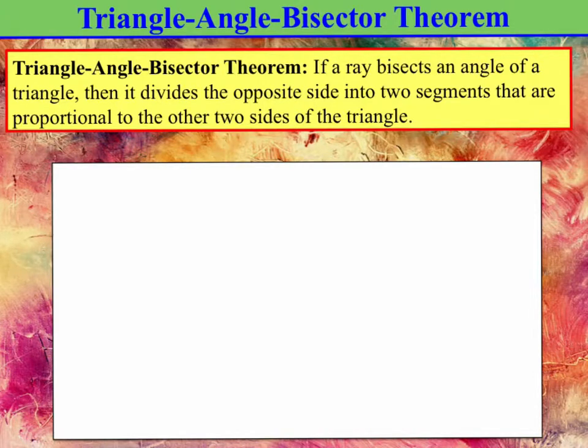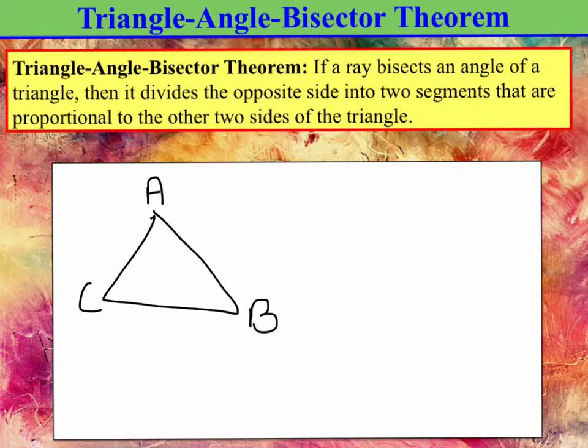Here is the triangle angle bisector theorem. If a ray bisects an angle of a triangle, so let's say that you have a triangle, and we're going to label this triangle C, A, and B. If you have a triangle, then if a ray bisects the angle of a triangle...